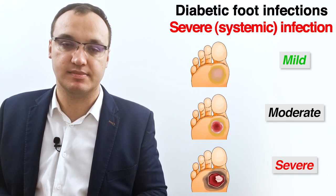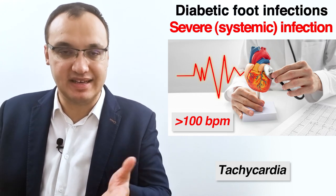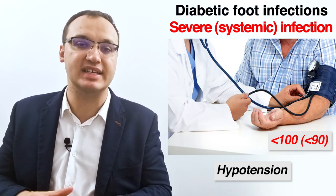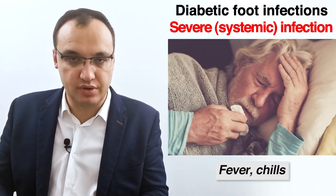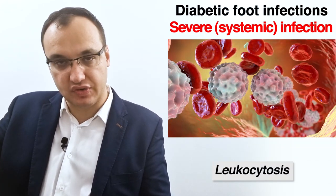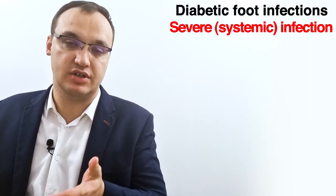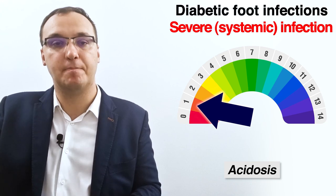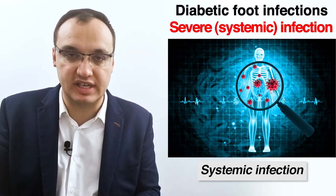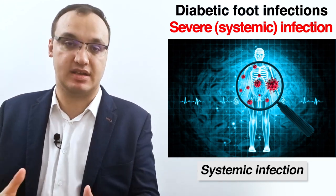For severe infections, we have systemic signs: tachycardia with heart rate above 100, hypotension below 90 mmHg, fever, chills, confusion, and vomiting. Laboratory values include leukocytosis, azotemia — increased nitrogen in the blood — hyperglycemia, and acidosis with a dropping pH. When we see all these signs, we know it is a systemic infection affecting the whole body, organs, and blood supply.